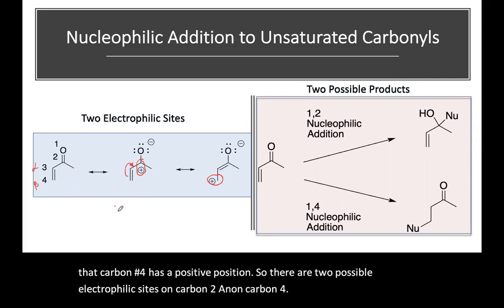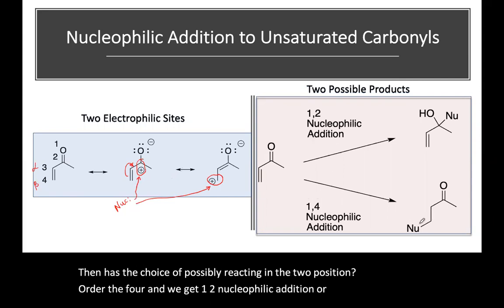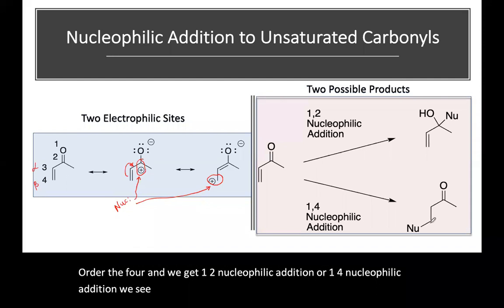A nucleophile then has the choice of possibly reacting in the two position or the four, and we get 1,2 nucleophilic addition or 1,4 nucleophilic addition. We see the nucleophile added in position four. This is also called conjugate addition.